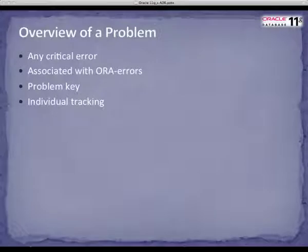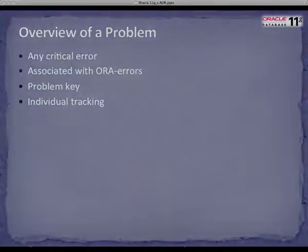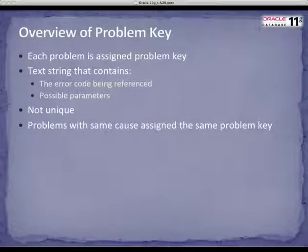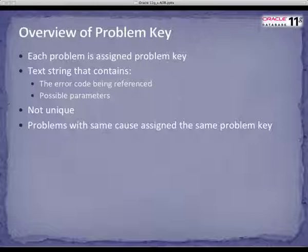ADR identifies a problem as any critical error that has occurred while using the database. Each problem is usually associated with an ORA error. DBAs often search for these ORA errors through the alert log files. ADR also assigns each problem a problem key and then individually tracks it. The key is a text string that contains the error code being referenced and any possible parameters. Problem keys, however, are not unique, and any two or more problems with the same root cause will be assigned the same problem key.